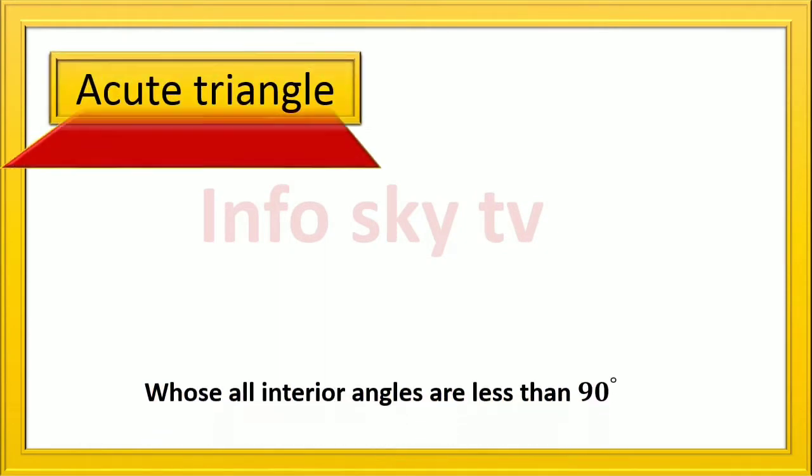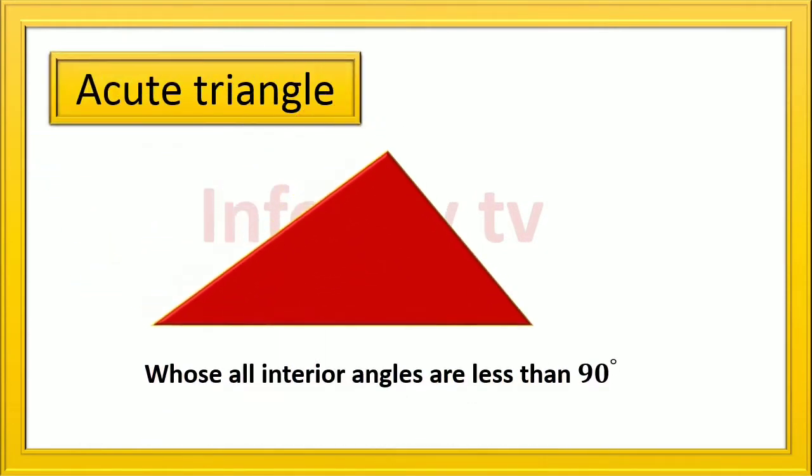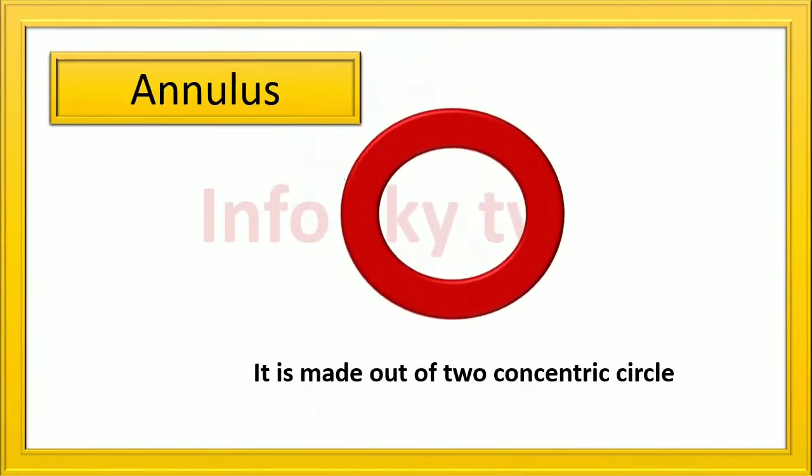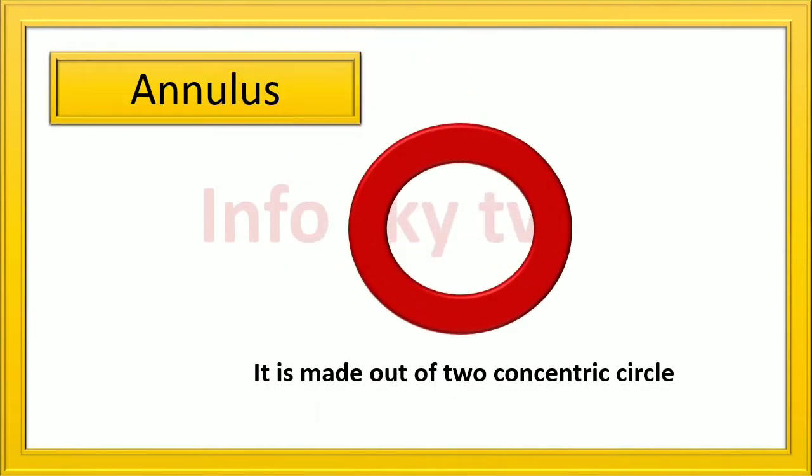Acute Triangle: whose all interior angles are less than 90 degree. Annulus: it is made out of two concentric circles.